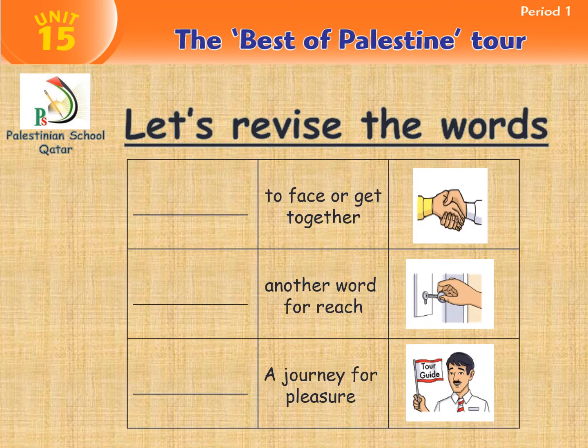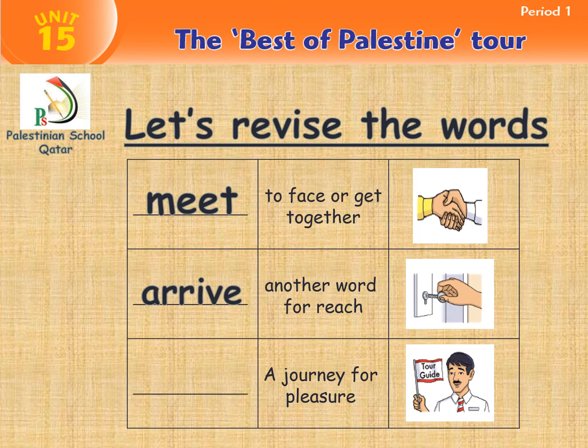Now let's revise the words. Look at the picture, read the meaning, and write the word. Look at the first picture: 'to face or get together' — yes, meet, very good. Another word for 'reach' — yes, arrive. 'A journey for pleasure' — yes, tour.